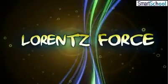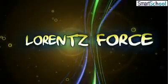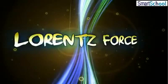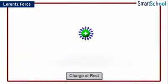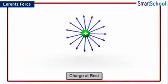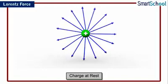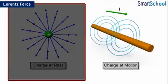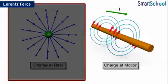In this module, we will be learning about Lorentz force. As you learned earlier, charges at rest produce an electric field. Moving charges or a current passing through a conductor produces both an electric and a magnetic field around it.